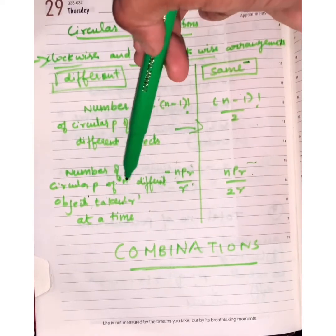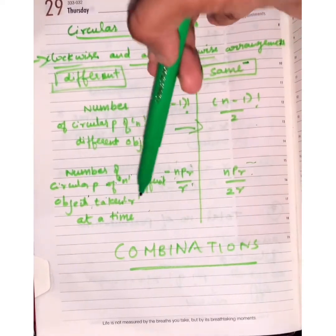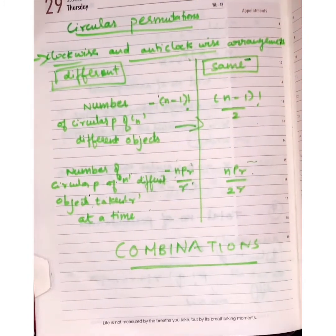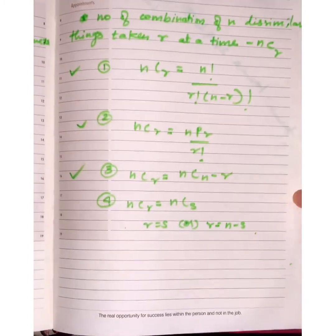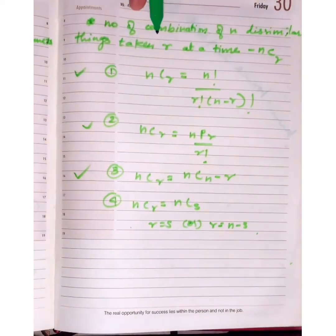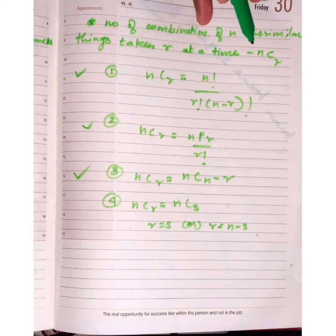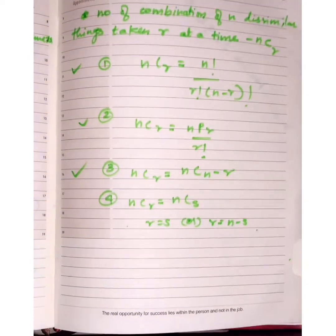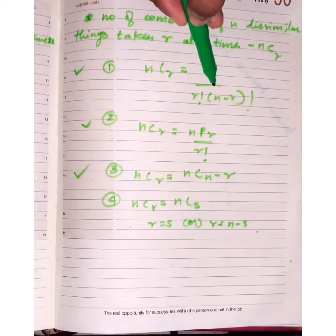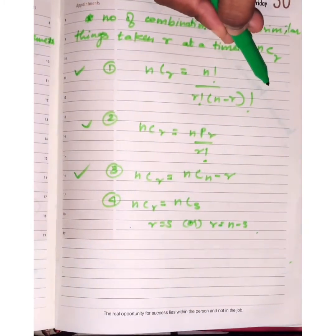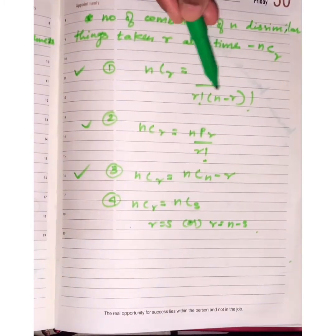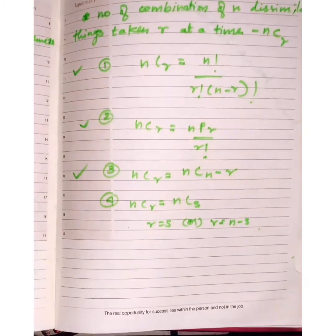Moving to combinations: the number of combinations of n different items taken r at a time is denoted by nCr. The formula is nCr = n! / (r! × (n−r)!). Substituting the given values of n and r will give you the answer.